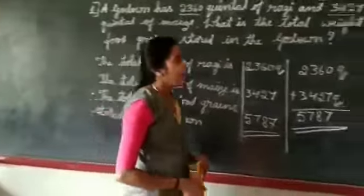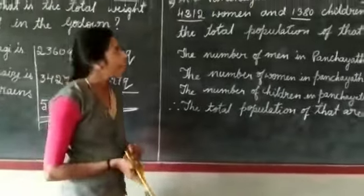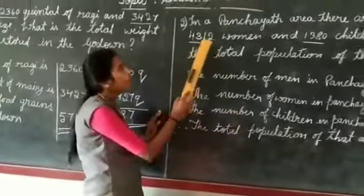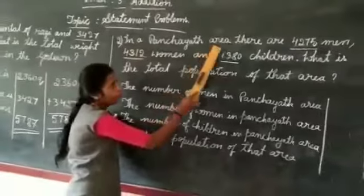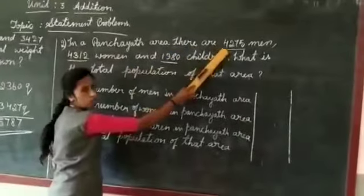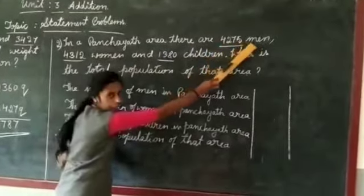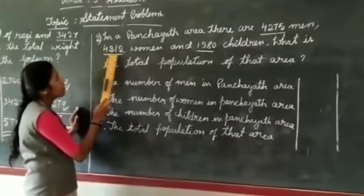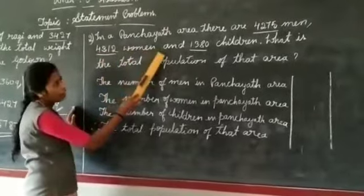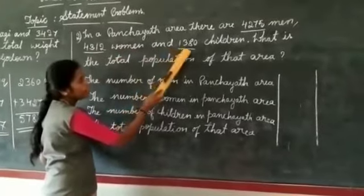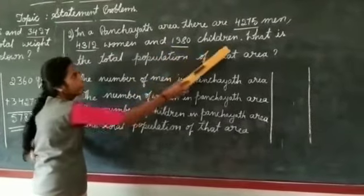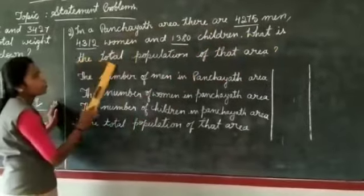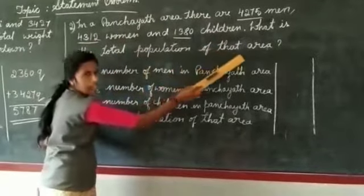Now, let us see example 2. In a Panchayat area, there are 4,275 men, 4,312 women and 1,380 children. What is the total population of that area?